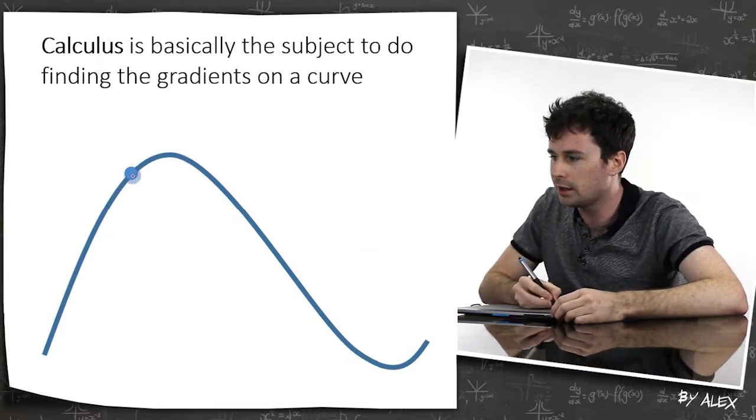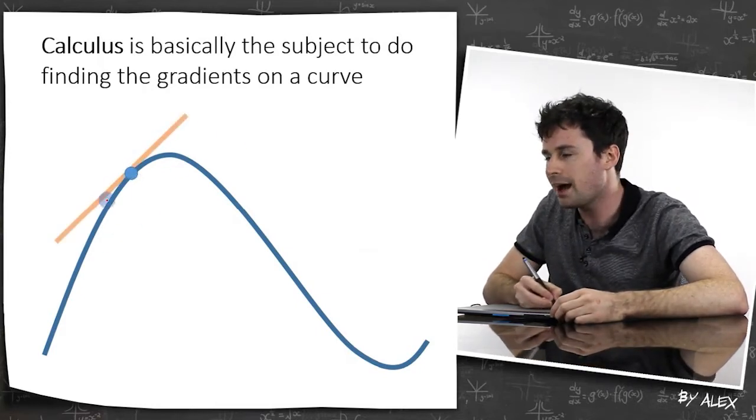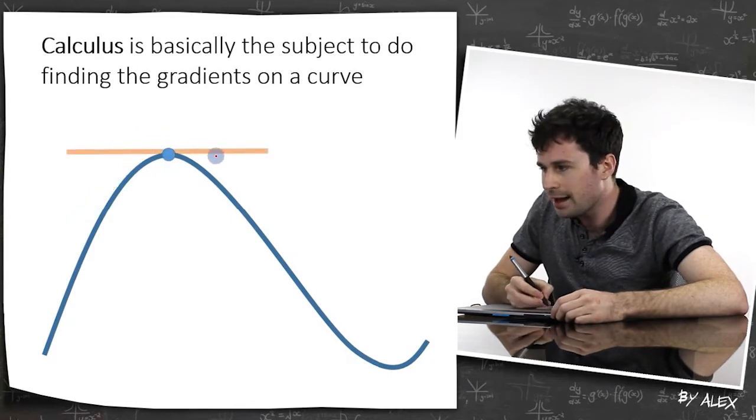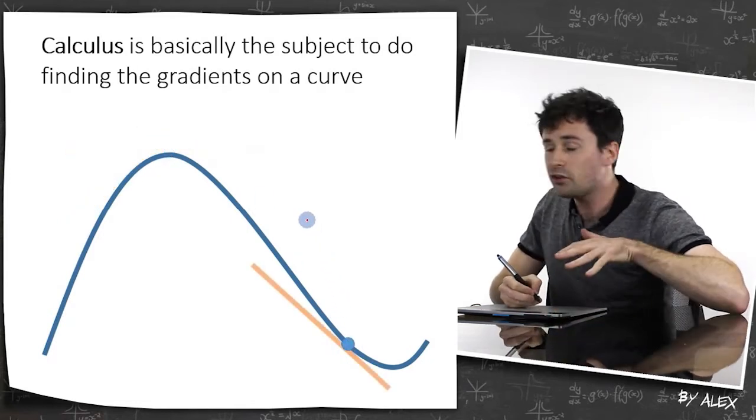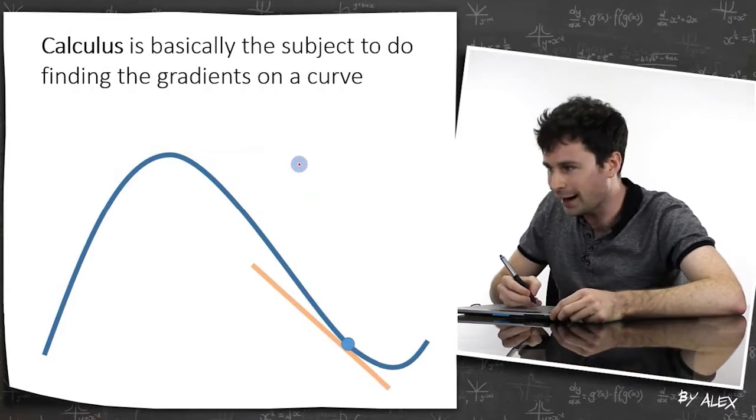So if we look at something like this, we'd find out that this gradient's about one, here the gradient's about zero, and here the gradient's about negative one, and this is what calculus is here to find, gradients.